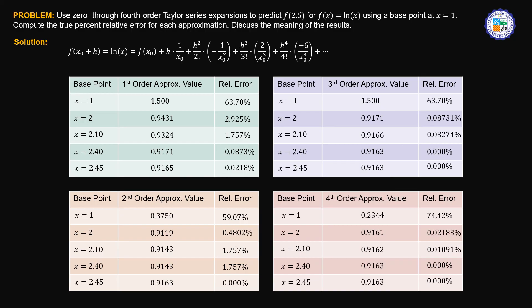In conclusion, the choice of an appropriate base point affects the relative error. The point of interest is 2.5, and if we choose a base point close to 2.5, the approximated value has a low error. Moreover, as the order of approximation is increased, the relative error is also decreased, thereby approaching the true answer. In other words, if the approximation is near to the true answer, the relative error approaches a value of 0. Thank you so much.